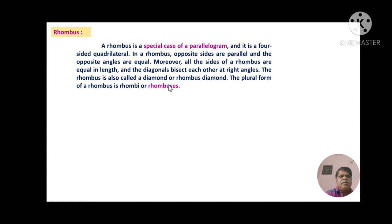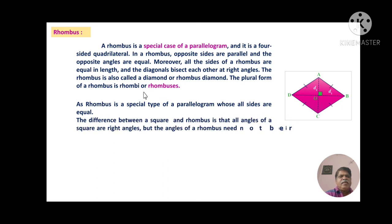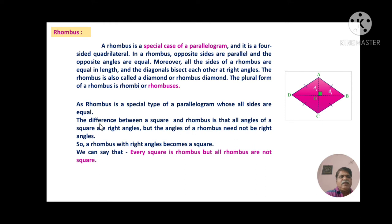The plural form of rhombus is rhombi or rhombuses. The figure shows the diagram of a rhombus ABCD where diagonals AC and BD intersect at point O at a right angle. D1 and D2 are the diagonals. A rhombus is a special type of parallelogram whose all sides are equal. The difference between a square and a rhombus is that all angles of a square are right angles, but the angles of a rhombus need not be right angles. So a rhombus with right angles becomes a square. We can say every square is a rhombus but all rhombuses are not squares.